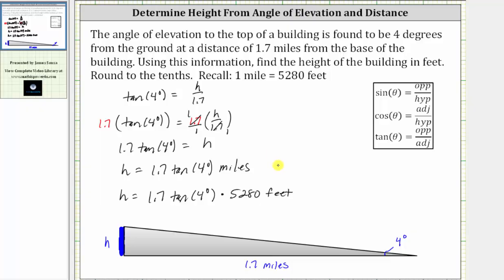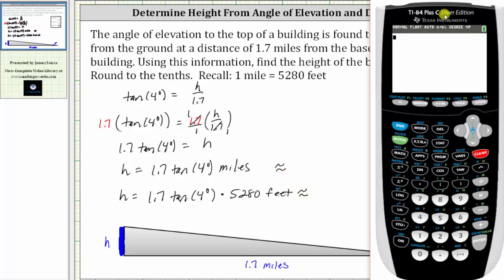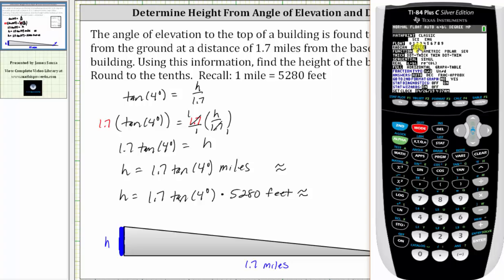And now let's find the approximate height in miles and in feet using the calculator. We need to make sure the calculator is in degree mode. So we press the mode key and make sure we have degree highlighted. If degree is not highlighted, we go down to the correct row, highlight degree, and then press enter. Going back to the home screen, we press second mode.